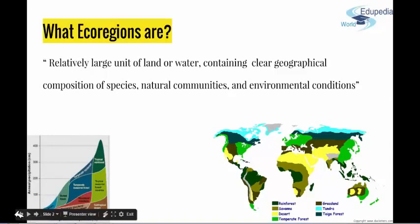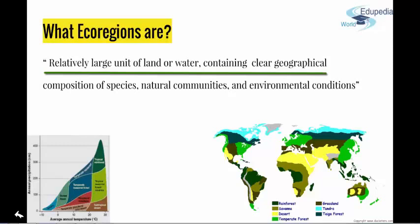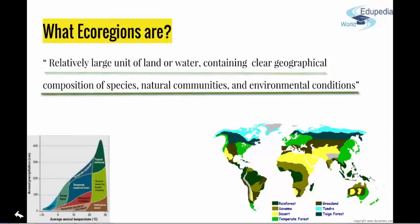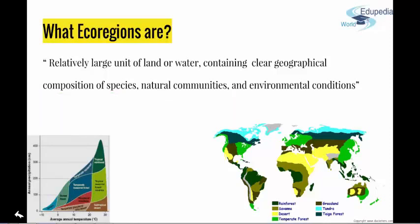Firstly, we define ecoregions as a relatively large unit of land or water containing a geographically clear composition of species, natural communities, and environmental conditions. So basically, ecosystems within a single ecoregion have certain common characteristics. Just to mention that ecoregions are also known as biomes.